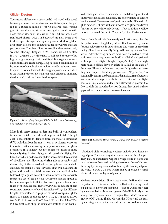With each generation of new materials and development and improvements in aerodynamics, the performance of gliders has increased. One measure of performance is glide ratio. A glide ratio of 30 to 1 means that in smooth air a glider can travel forward 30 feet while only losing one foot of altitude. Glide ratio is discussed further in Chapter 5, Glider Performance. Due to the critical role that aerodynamic efficiency plays in the performance of a glider, gliders often have aerodynamic features seldom found in other aircraft.